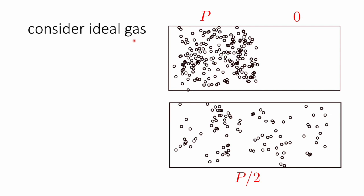There is something missing. Consider an ideal gas — atoms that don't repel or attract each other. Here are two cylinders. Which arrangement is more likely: all the atoms moving into one half of the cylinder, or atoms distributed at random throughout? The answer is that the random distribution is more likely because there are many different arrangements available, whereas there is only one arrangement where all atoms are on one side. This is an ordered scenario versus a disordered scenario with many different configurations possible.